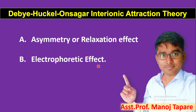Today we are going to discuss the Debye-Hückel-Onsager Interionic Attraction Theory. This theory is about the dissociation of strong electrolytes and their equivalent conductance. How equivalent conductance changes with dilution or concentration is explained by this interionic attraction theory. The Arrhenius theory explains conductance variation for weak electrolytes, while this theory explains it for strong electrolytes.